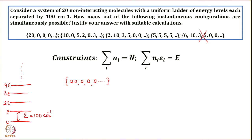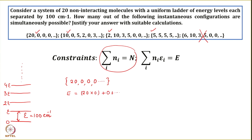Let us compute the total energy for each remaining configuration. For the first, (20, 0, 0, 0, 0): energy = 20 × 0 + 0 + ... = 0. For the second, (10, 0, 5, 2, 0, 3): energy = 10 × 0 + 0 × E + 5 × 2E + 2 × 3E + 0 × 4E + 3 × 5E = 0 + 10E + 6E + 15E = 31E.